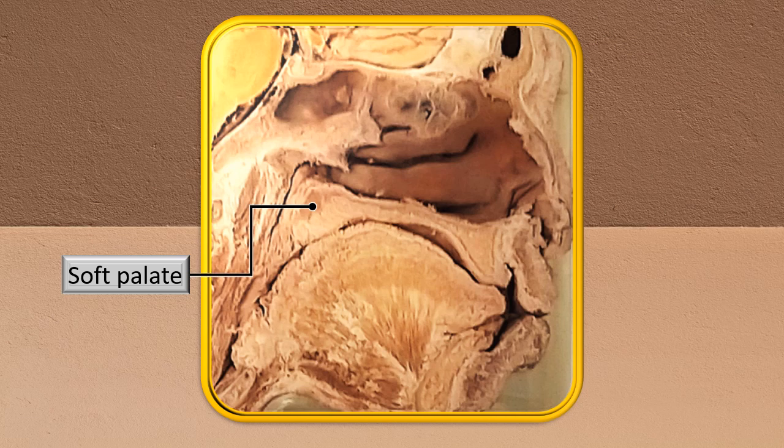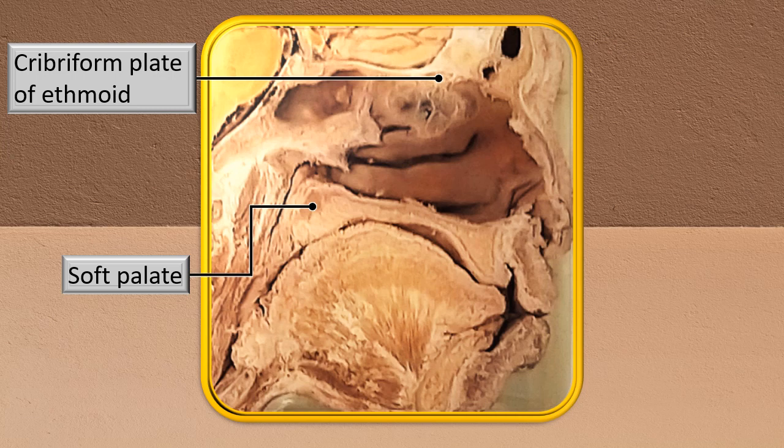A little behind the hard palate you can see the soft palate; that muscle mass seen as a dark brown structure is the uvula, the uvular muscles. Right above, in the uppermost part of the olfactory area, is a perforated piece of bone with many small openings — the cribriform plate. Through these perforations, the olfactory fibers running vertically pierce through this plate and join the olfactory bulb. From the olfactory bulb, these fibers go through the olfactory tract into the central nervous system.